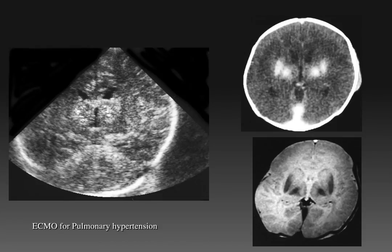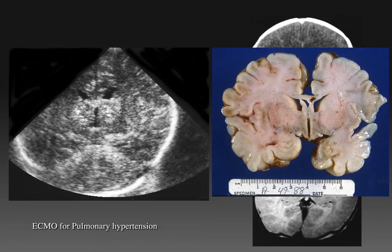This child has very similar echogenic lesions in both the putamina and globus pallidus, as seen on ultrasound and post-mortem CT and MRI. This child was treated with ECMO for pulmonary hypertension. At pathology, we expected to see focal hemorrhages. However, on the gross specimen, there was no abnormality. Only during microscopic analysis did we see that these were related to microcalcifications.